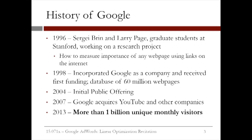Six years later, Google's initial public offering took place, and Google became a publicly traded company. After going public, Google has continued to grow at an immense pace, acquiring other internet companies like YouTube in 2007. In 2013, Google's traffic reached more than a billion unique monthly visitors. Today, more than two-thirds of all searches done on the internet are powered by Google's search engine.